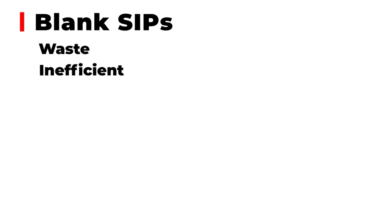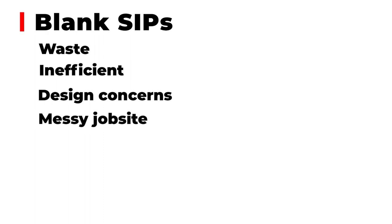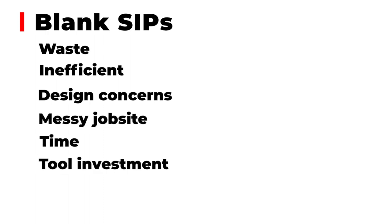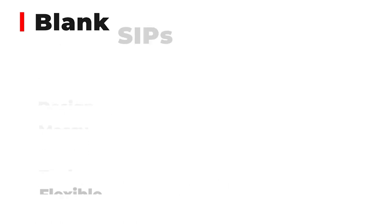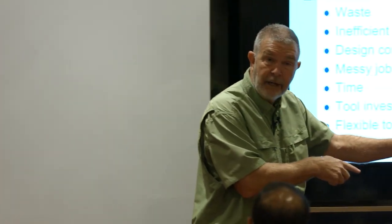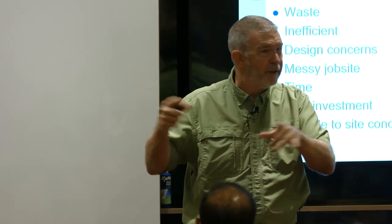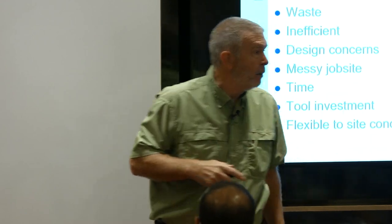We talked about blank SIPs — it's like selling a sheet of plywood, just blanks. Is that the best way to order a panel package? I'd suggest not, unless you're well-versed in how SIPs are cut in the field and have the right training and tooling. One case where I'd order blank panels is a reclaimed barn — there's no such thing as plumb, level, or square in a reclaimed timber frame, and I'm not paying to have panels fabricated in the factory only to recut them all on site.